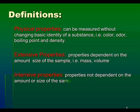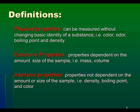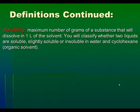Intensive Properties, on the other hand, are properties that are not dependent on the amount or the size of the sample. Examples would be density, boiling point, and color. Going back to water, a cup of water will boil at 100 degrees Celsius at one atmosphere of pressure — sea level. A pot of water, a gallon or two, will also boil at 100 degrees Celsius at one atmosphere of pressure. We'll be working with two different solvents: water and an organic solvent, cyclohexane.